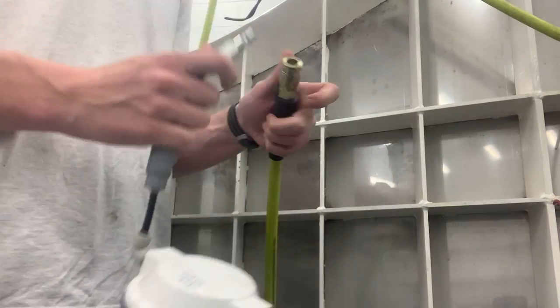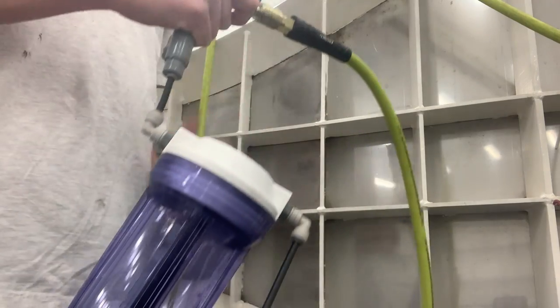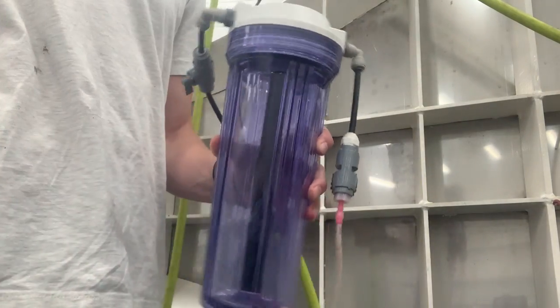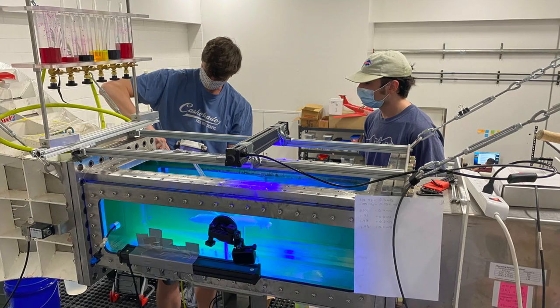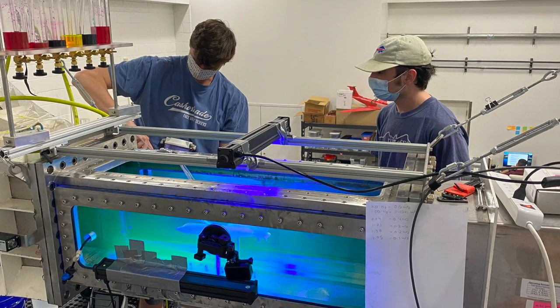We also used a pressurized canister to inject the dye. The advantage of this system is that we have more control of the injection speed of the dye and can run the tunnel at higher speeds. However, we can only test up to two points at a time using a single canister.